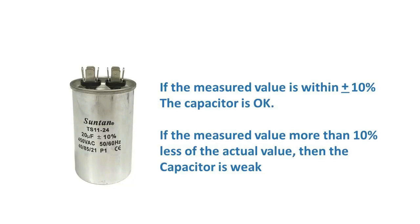If the observed value is less or more than 10% of the capacitor's original value, the capacitor is weak or defective. If we use this capacitor with the motor, the current drawn by the motor will be increased and the motor winding will get overheated.